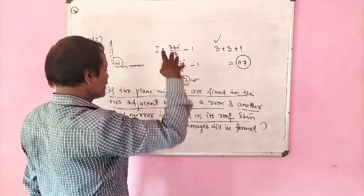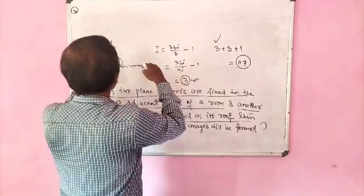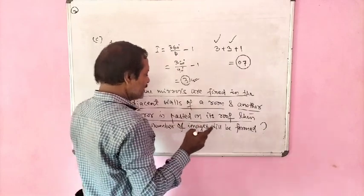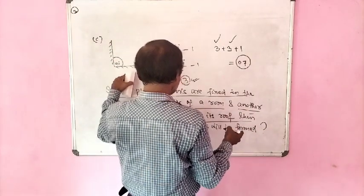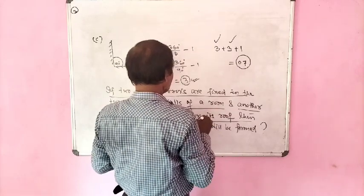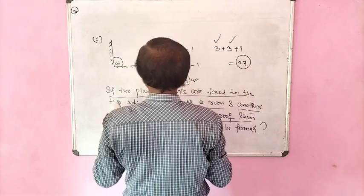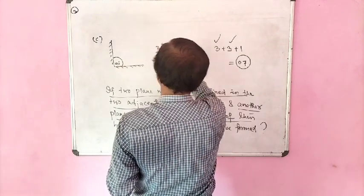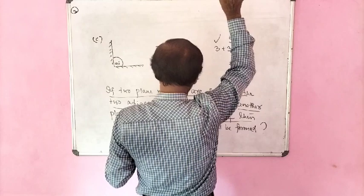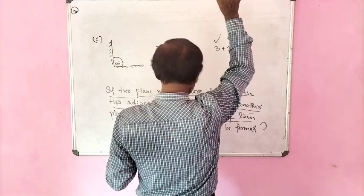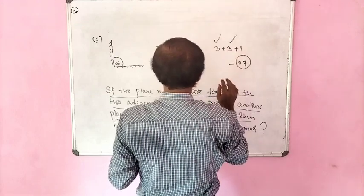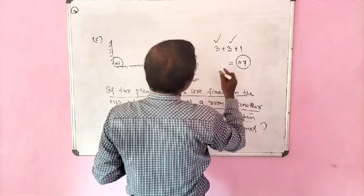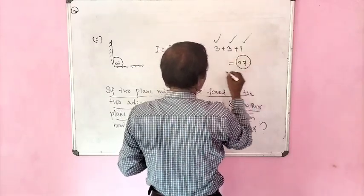As the mirror is pasted on the roof, another three images will be seen. So 3 plus 3, and another image will be formed due to his own body. That is, if I am placed between two plane mirrors, I will see three images in those two mirrors, three images in the mirror pasted on the roof, and one image of myself in the roof mirror. Total images will be 3 plus 3 plus 1 = 7.